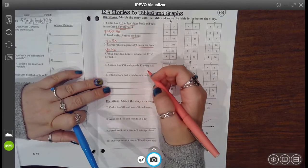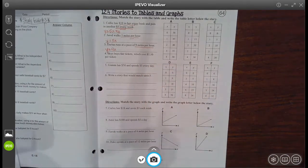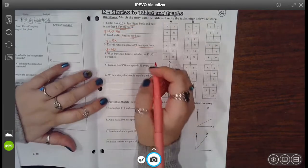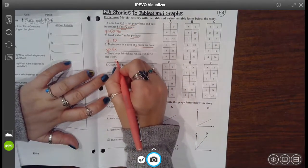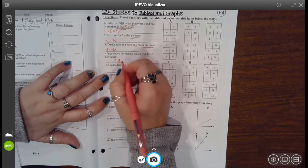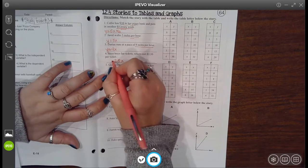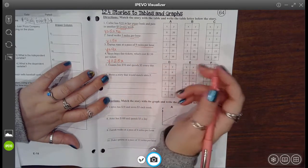Sky buys fare tickets which cost two dollars and fifty cents per ticket. So my rate is two dollars and fifty cents or 2.5 times the number of tickets and that's equal to the cost and there's nothing else.